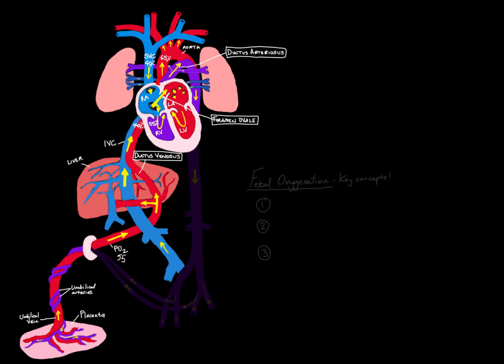You might wonder: if poorly oxygenated blood from the SVC and nicely oxygenated blood from the IVC are both entering the right atrium, why don't they just collide and ruin the process? It's actually quite remarkable how these two streams stay separated. There's an effect called the Coanda effect — the tendency of fluids to hug the surfaces they travel over. Like when pouring beer from a pitcher and it runs down the side, the SVC blood hugs the anterior right atrial wall and stays out of the way of the IVC jet.